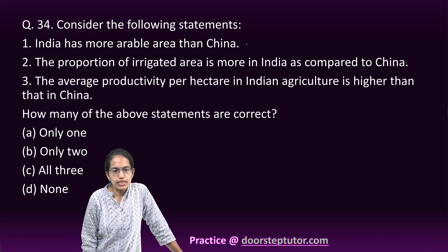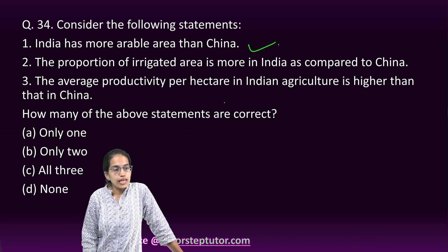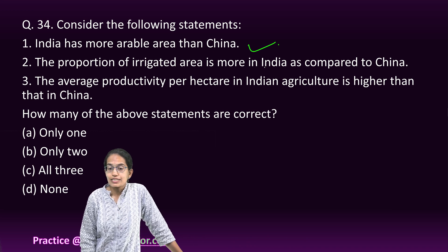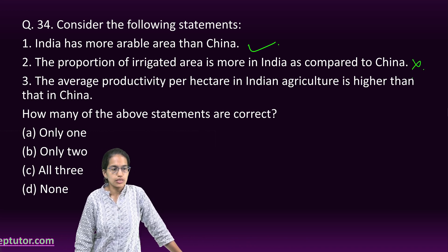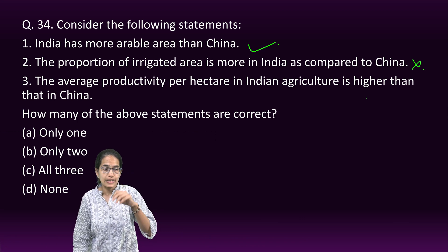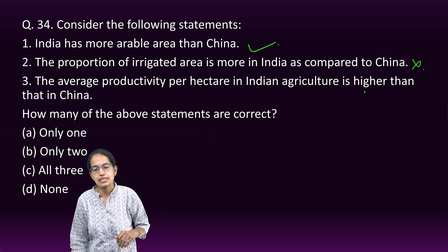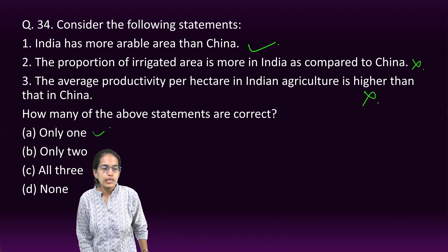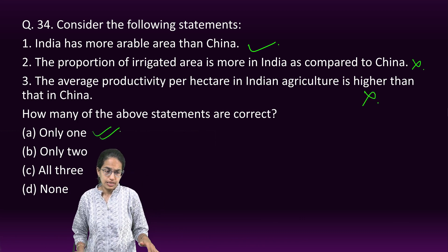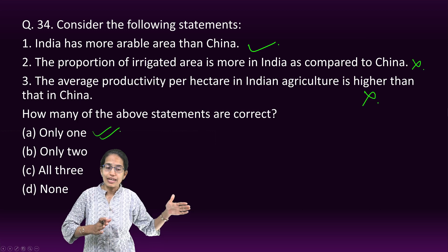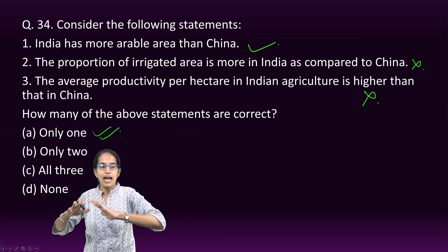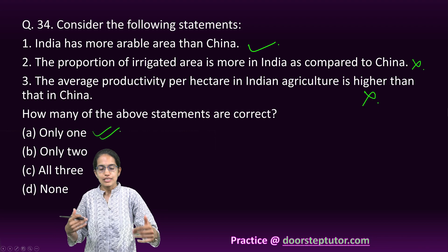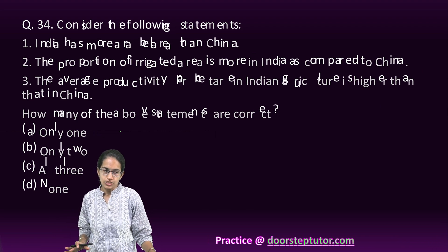The next question compares India and China in terms of agriculture. India has more arable land than China — that is correct. However, the proportion of irrigated land in China is more than in India — so that statement is incorrect. The average productivity in China is higher than India — that is also incorrect as stated. So only the first statement is correct; despite having higher arable land, India's irrigation proportion and productivity are relatively lower.